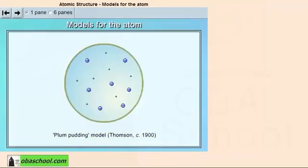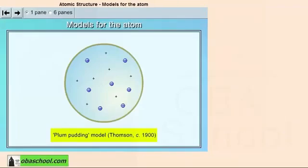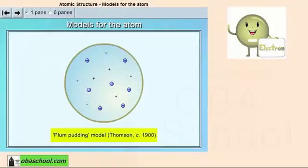After that came Thomson's model, which is known as the Plum Pudding Model. Thomson was the one responsible for the electron discovery, which holds a negative charge. However, this discovery raised two major questions.